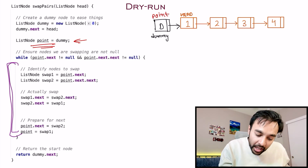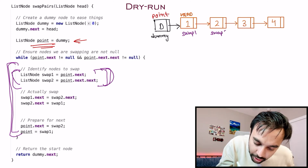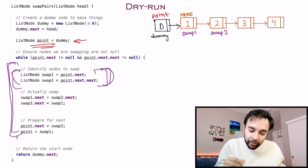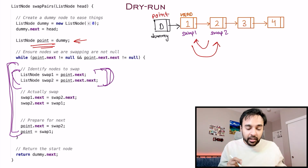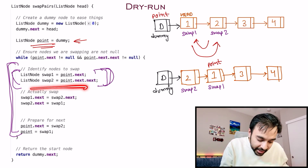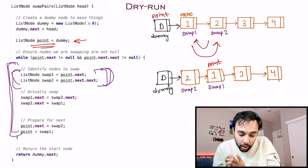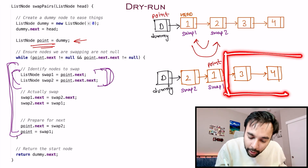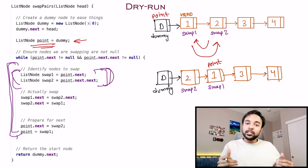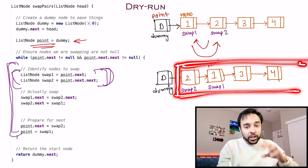Inside the loop, swap1 = point.next and swap2 = point.next.next. You've identified both nodes to swap. You then perform the three pointer operations: swap1.next = swap2.next, swap2.next = swap1, and point.next = swap2. This moves swap2 to the front of the pair and swap1 to the back. Then point = swap1 to advance your viewpoint. The loop runs again for the next pair. Once the loop exits, return dummy.next, which points to the fully swapped list.